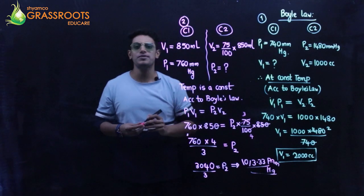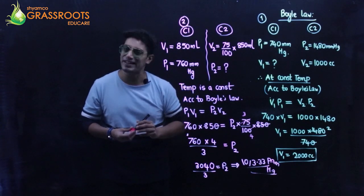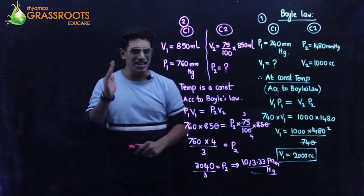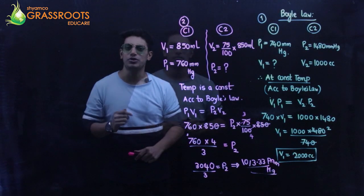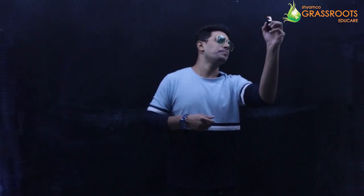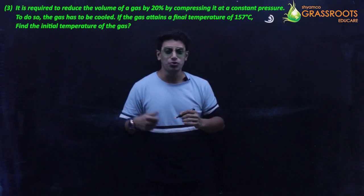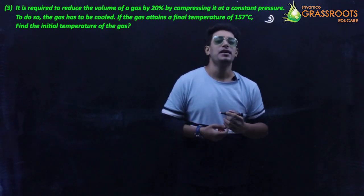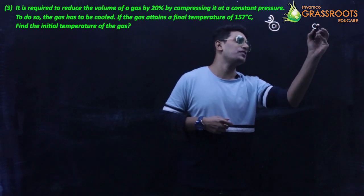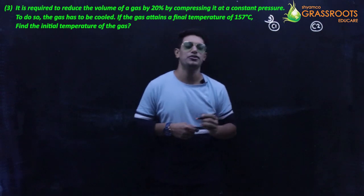So these are the two sums based on Boyle's law, where temperature remains constant and the formula is P1 × V1 = P2 × V2. The third numerical has data with constant pressure — that's Charles' law. I'll have case one and case two for the same gas.